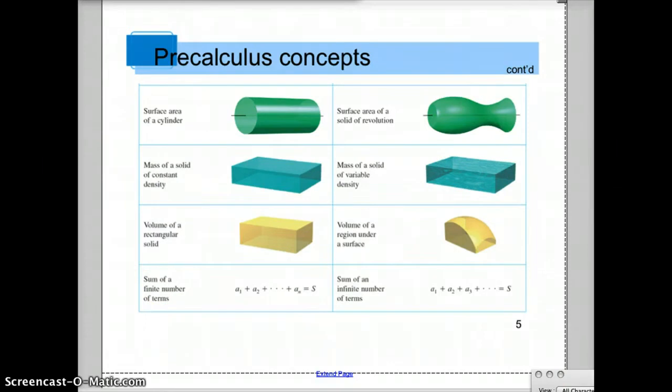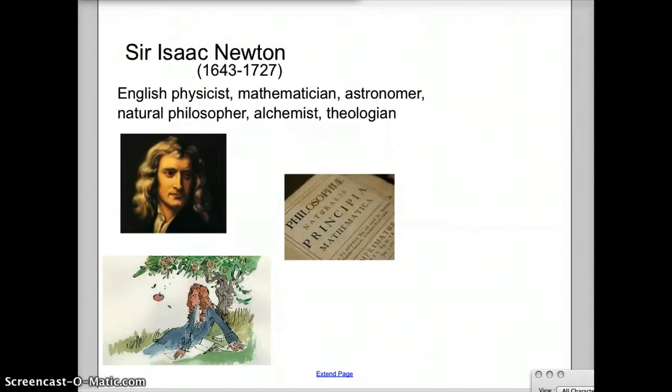So our two big mathematicians who figured out calculus, who discovered all of the concepts, or a lot of the concepts, the starting concepts of calculus, are Sir Isaac Newton and Gottfried Leibniz. There's a big conflict, a big discussion, a big disagreement about who actually invented calculus. Because Sir Isaac Newton, he was an English physicist, mathematician, astronomer, natural philosopher, alchemist, and theologian.